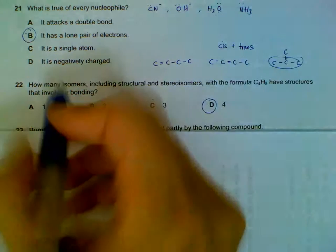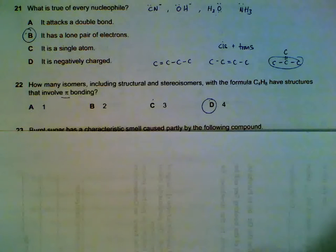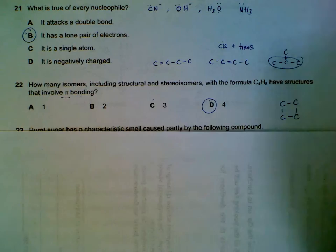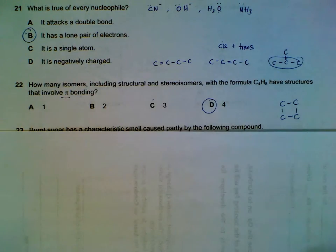Why do they mention involve pi bonding? Because they do not want you to have this structure, which is also C4H8, but doesn't have pi bonding.